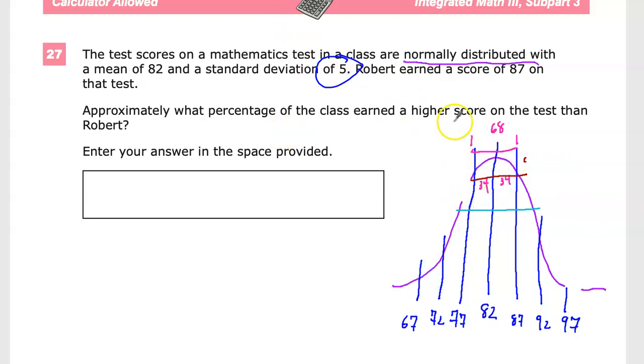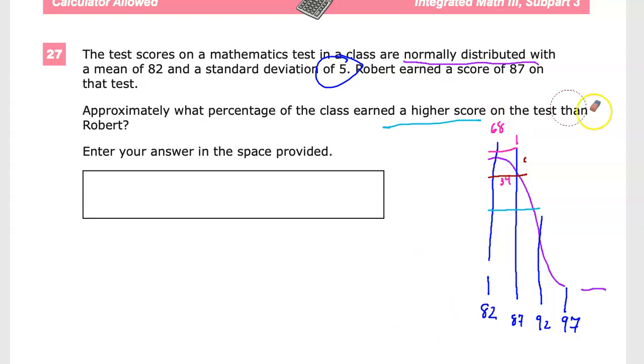Now, we want to know about students who scored higher than he scored. So, all of this over here doesn't actually matter, because we're not dealing with anything lower. Robert is right here on this curve. We want to know what this is.